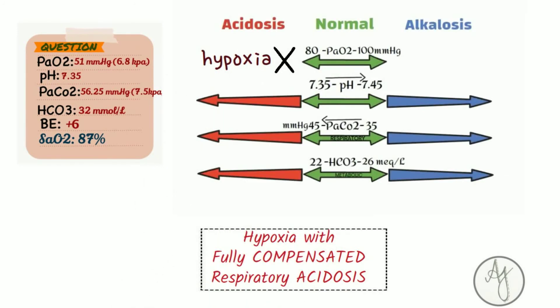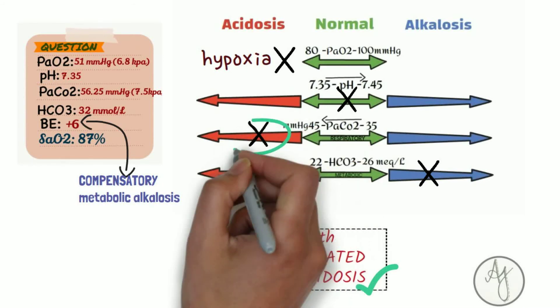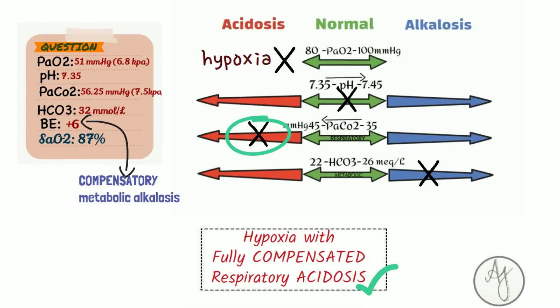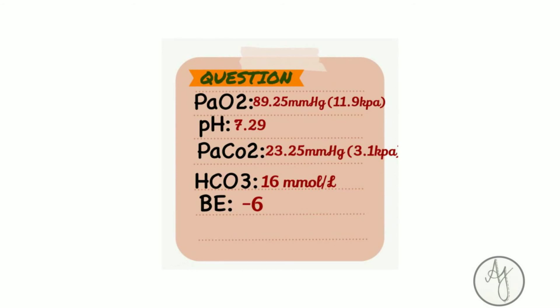The patient is hypoxic with a normal pH — it appears as if no acidosis or alkalosis is present, but the other parameters are abnormal. Carbon dioxide is raised, indicating respiratory acidosis has been retained. Bicarbonate is also raised, indicating metabolic alkalosis — but this raised bicarb is actually the compensating factor, indicating renal compensation. So the primary problem is respiratory acidosis with full renal compensation.